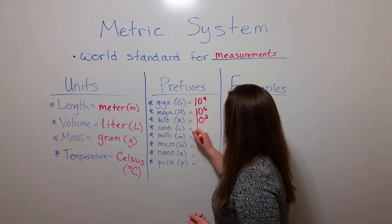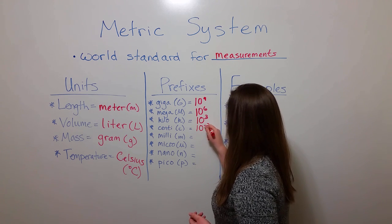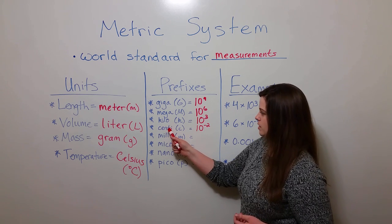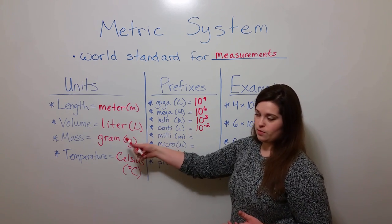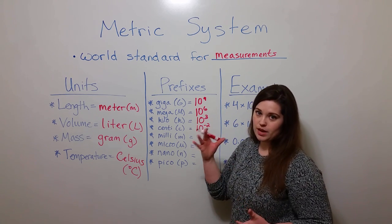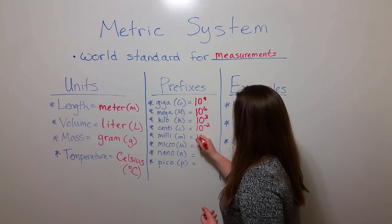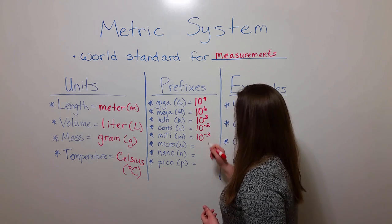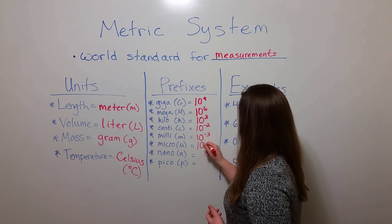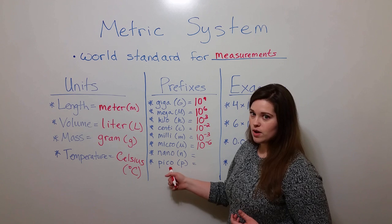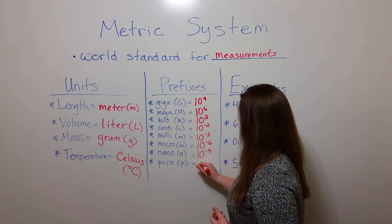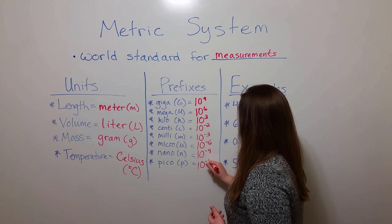Centi is ten to the minus two. Note here that the exponent is negative because using prefix centi is smaller than the base unit, whereas these first three prefixes made the unit bigger than the base unit. Milli is getting even smaller at ten to the minus third. Micro, even smaller at ten to the minus sixth. Nano and pico getting even smaller at ten to the minus nine and ten to the minus twelve.